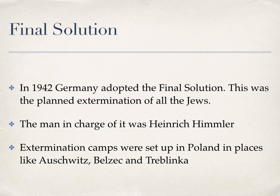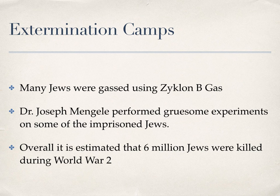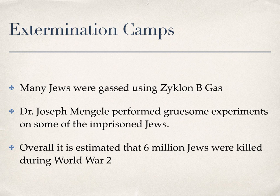To carry this out, the Einsatzgruppen was not efficient enough, so they came up with killing factories known as extermination camps, set up in Poland away from the eyes of the German people — in places like Auschwitz, Belzec, and Treblinka. In these camps, many Jews were gassed using Zyklon B gas, and they were also experimented on by a man called Joseph Mengele.